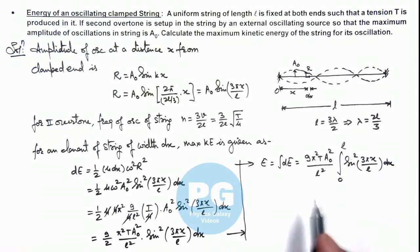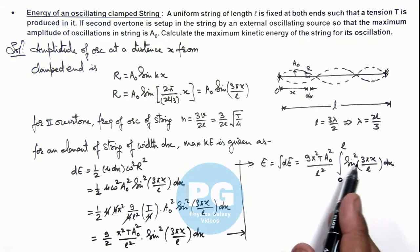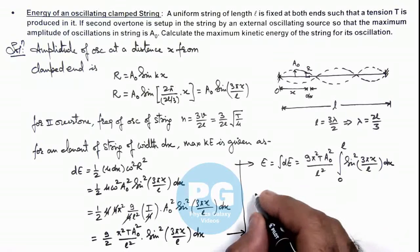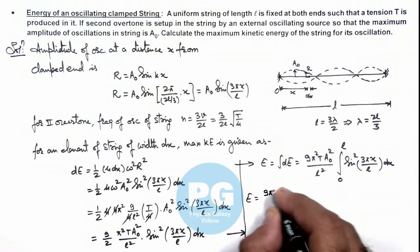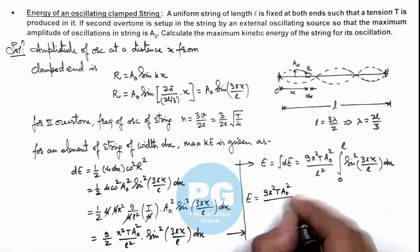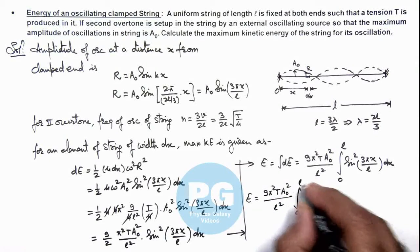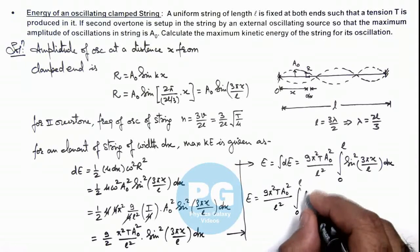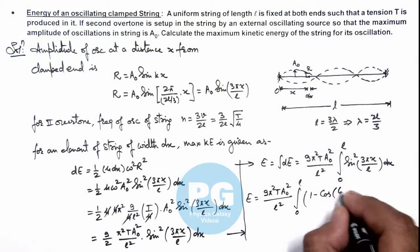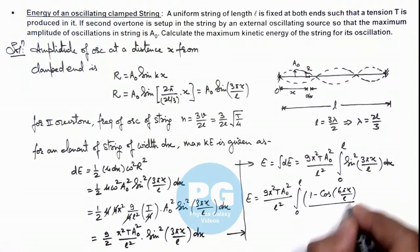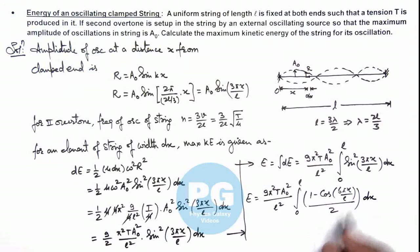And this you can easily integrate by transforming it in twice angle form of cosine. So this E we can write as 9π²T A₀²/(2l²) and this integration from zero to l we can write it [1 - cos(6πx/l)]/2 dx. I leave this simple integration as an exercise for you that you can integrate it and verify the result you'll be getting is 9π²A₀²T/(4l). That is the result of this problem.